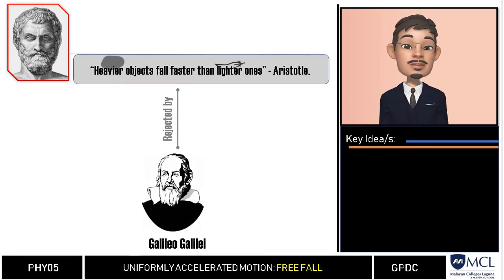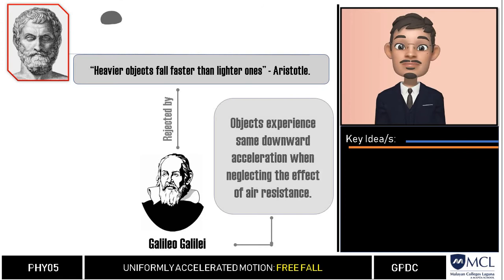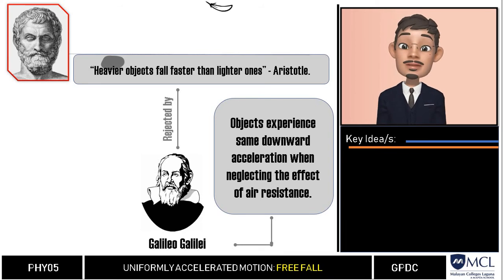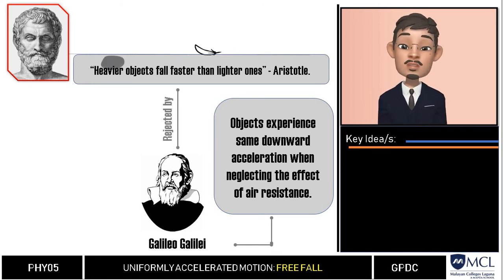According to Galileo, objects experience the same downward acceleration when neglecting the effect of air resistance. Thus all objects dropped at the same instant regardless of their mass and size will all fall at the same time.